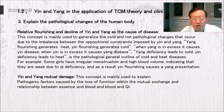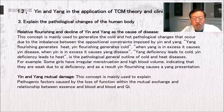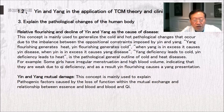Relative flourishing and decline of yin and yang is the cause of disease. This concept is mainly used to generalize the cold and hot pathological changes that occur due to the imbalance between the oppositional constraints imposed by yin and yang. Yang flourishing generates heat; yin flourishing generates cold. When yang is in excess it causes yin disease; when yin is in excess it causes yang disease. Yang deficiency leads to cold; yin deficiency leads to heat — this is the pathological general outline of cold and heat diseases. For example, some women have irregular menstruation and high blood volume, indicating weakness due to qi deficiency, and as a result yin flourishing causes a yang presentation.